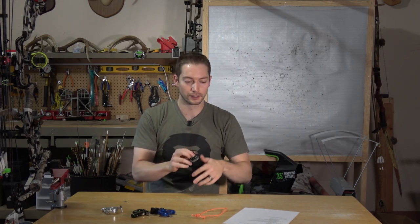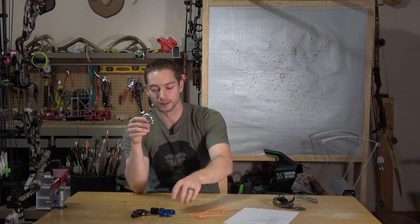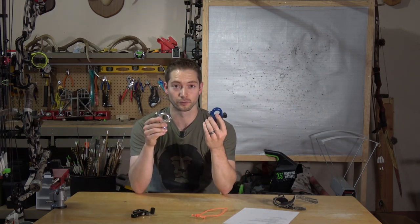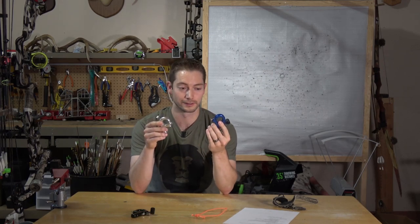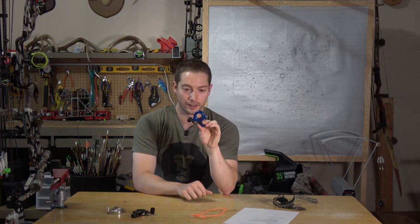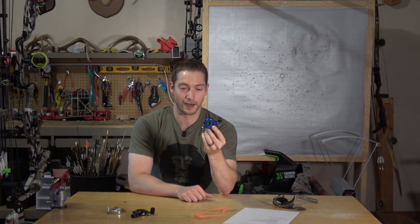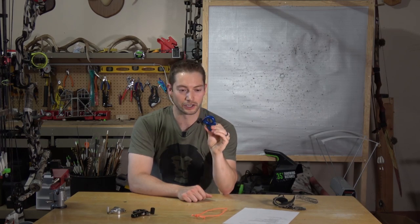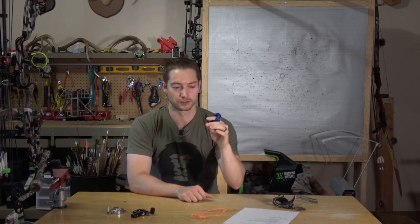Some people will transition to a release like this in combination with also using a thumb trigger release. So this spring, ever since ATA, I brought this release back from ATA. It's a Hot Shot X-Spot Deuce, which is a two finger release.